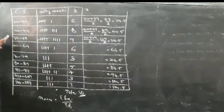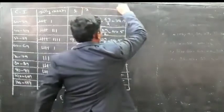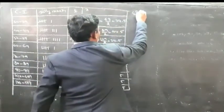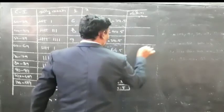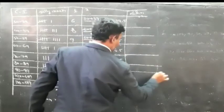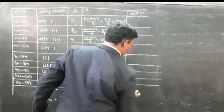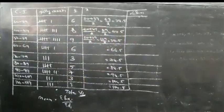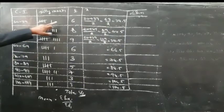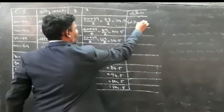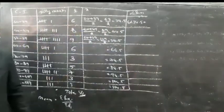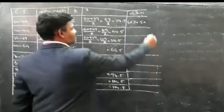Since the intervals increase by a fixed value, we can determine mid-values by pattern. Now I need the Sigma FiXi value — that means multiplying the frequency Fi and the mid-value Xi for each class. For the first class, frequency is 6, so 6 into 34.5 equals 207.